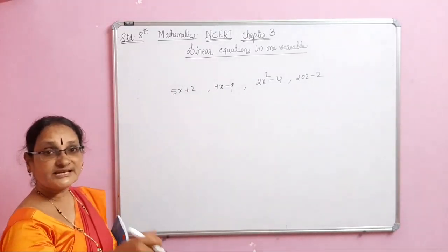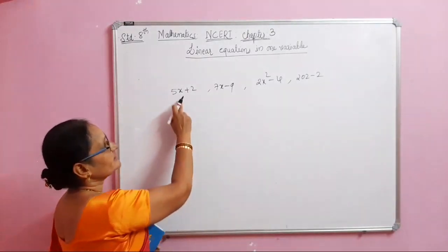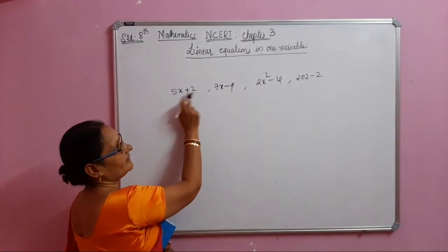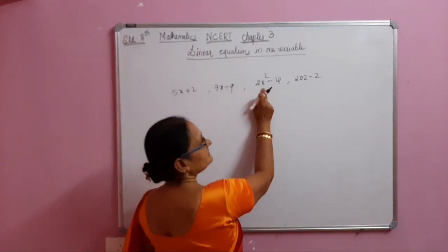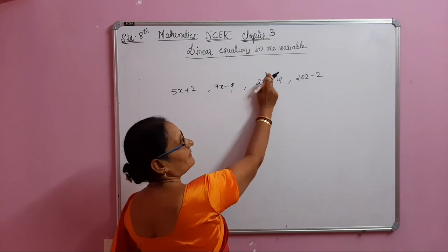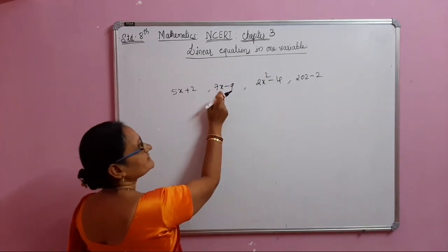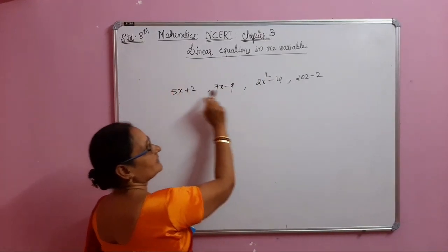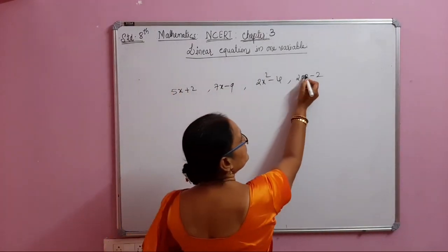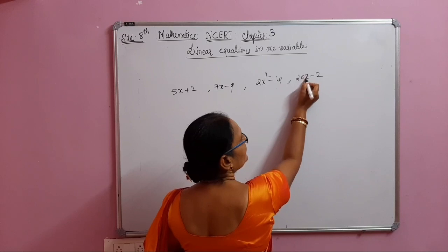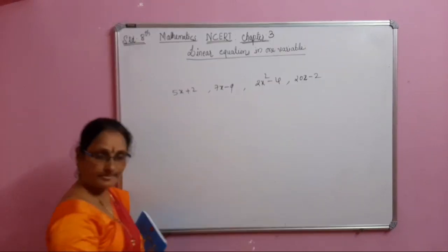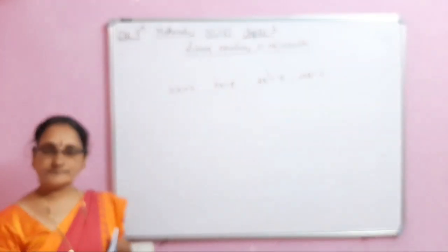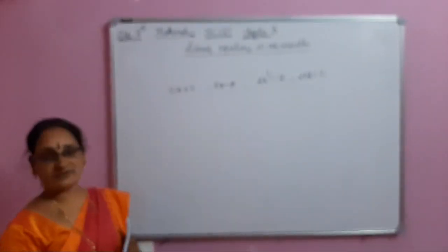Now, which are the variables? X is the variable — x is variable of power 1 in some, and x is variable of power 2 in another. Z is variable of power 1 here. But these are all not linear equations.